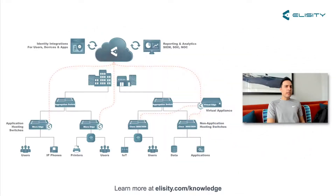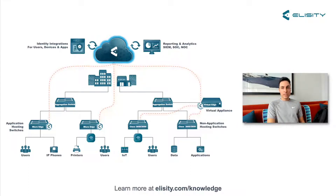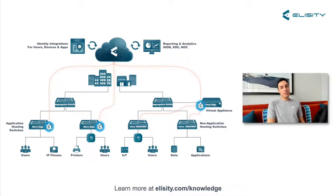Let's do a quick review on the Elicity architecture. Our control, management, and policy plane is cloud-delivered. This means that the user interface, the identity engine, and policy engine all live in a microservices-designed, customer-dedicated cloud instance. On-prem, we employ a lightweight piece of software that collects identity metadata, traffic flow analytics, among many other things, and also converts Elicity policy to policy that your existing infrastructure can execute on.